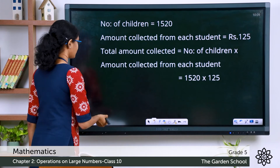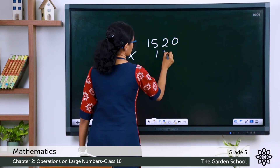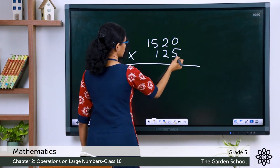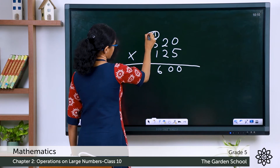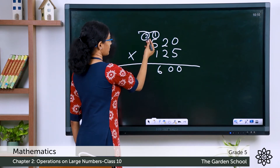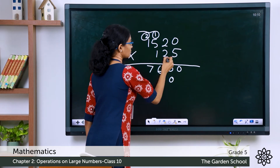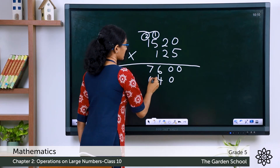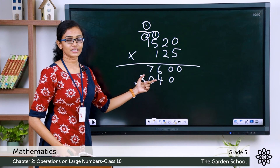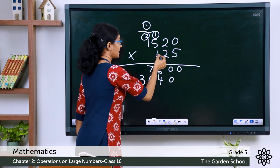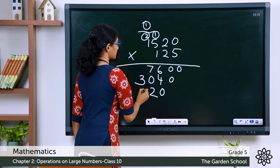Let's do the multiplication in the working column — 1520 × 125. Starting with the ones digit 5: 5 × 0 = 0, 5 × 2 = 10 carry 1, 5 × 5 = 25 plus 1 = 26 carry 2, 5 × 1 = 5 plus 2 = 7. First partial product: 7600. Now the tens digit 2: 2 × 0 = 0, 2 × 2 = 4, 2 × 5 = 10 carry 1, 2 × 1 = 2 plus 1 = 3. Second partial product: 3040.